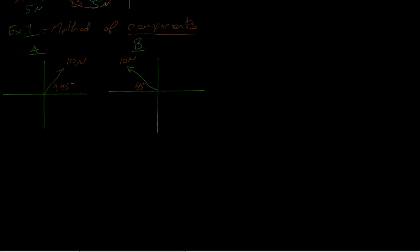For force A, we need an x and a y component. For force B as well, going the other way, an x and a y. This is a coplanar plane, so it's 2D. The x component is 10 cos 45 degrees. The reason it's cosine is from SOHCAHTOA — we have the hypotenuse and want the adjacent side, which uses cosine.